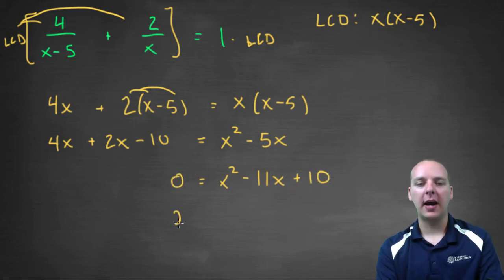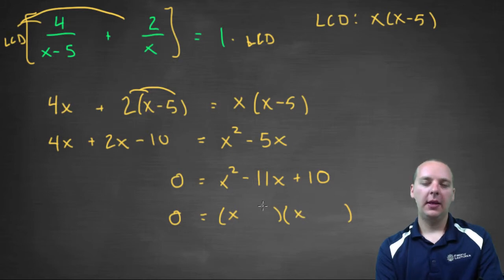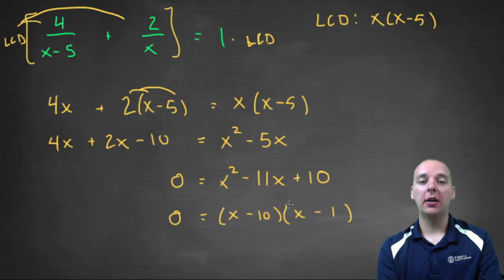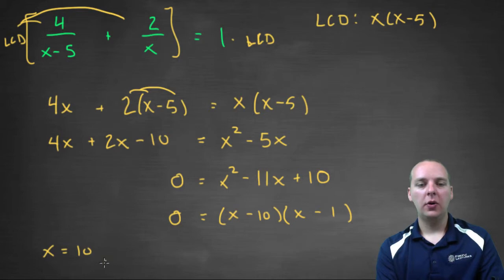Alright, I think we can factor that term right here. We'll have an X and an X, and then we'll have, let's see, probably a ten and a one. And I'm thinking X minus ten, X minus one. Yeah, that will give us minus eleven X, and then the product is still positive ten. So we get X equals ten, or X equals one.